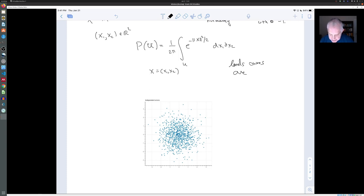E to the minus norm of X squared over 2, this function here is constant on circles. So the density decreases as you move outward, and it only depends on the distance.